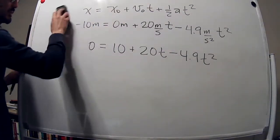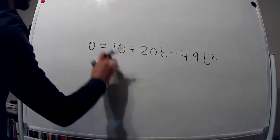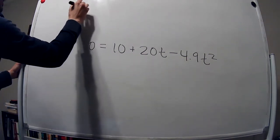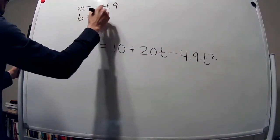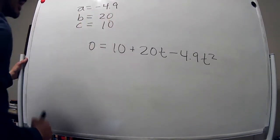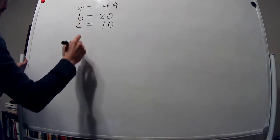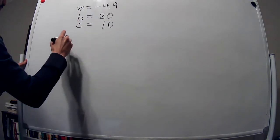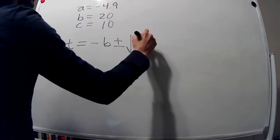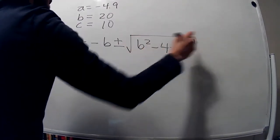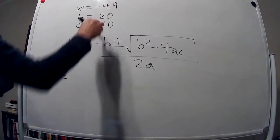Remember this just comes from the kinematic equation. So the coefficients are: A equals negative 4.9, B equals 20, and C equals 10. We can use the quadratic formula to find the roots: t equals negative B plus or minus the square root of B squared minus 4AC, divided by 2A.